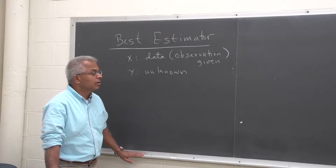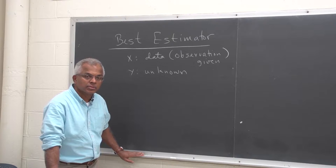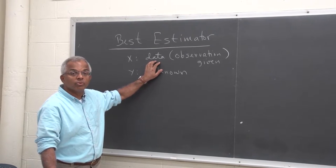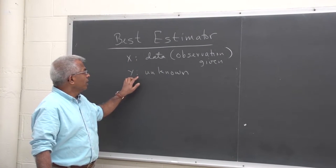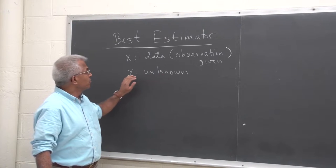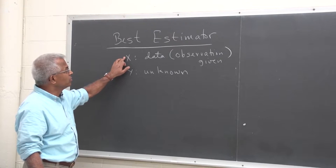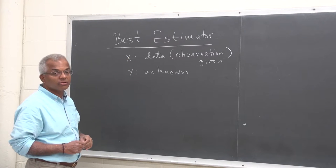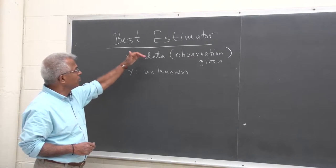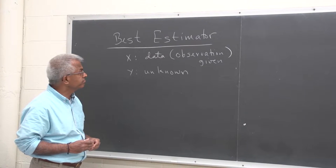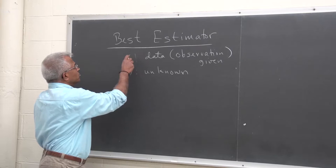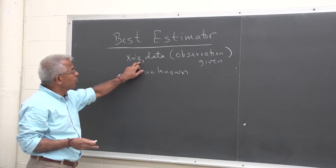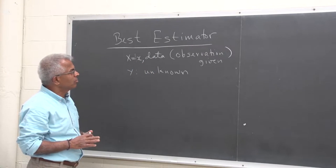Let's look at this problem: best estimator. This comes up in lots of situations. Generally, you are given some data and there is some unknown. We want to estimate the unknown in terms of the data. We'll take the simple problem and assume that x, a specific value — small x or x-naught — is known; that's the data observation that's given.